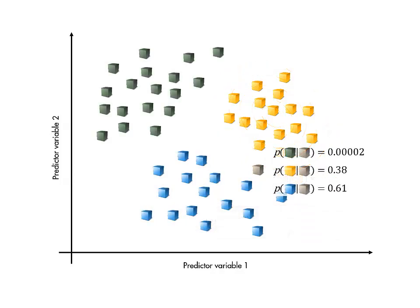We could calculate this probability for each class, then classify the observation according to which class was the most likely.